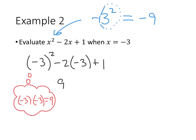Now we have -2 times -3, that's positive 6, and plus 1. We've done all our multiplying, we don't have any dividing to do. Adding and subtracting, 9 + 6 + 1 turns out to be 16.